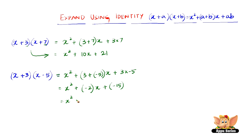So we have x squared, and plus into minus is minus, giving minus 2x. So x squared minus 2x, and plus into minus is minus 15. Therefore, the expansion of x plus 3 into x minus 5 is x squared minus 2x minus 15.